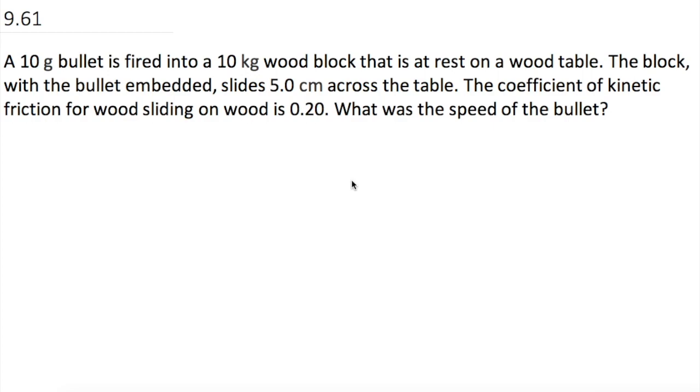A 10 gram bullet is fired into a 10 kilogram wood block that is at rest on a wood table. The block with the bullet embedded slides 5 centimeters across the table and the coefficient of kinetic friction for wood sliding on wood is 0.2. What was the speed of the bullet?